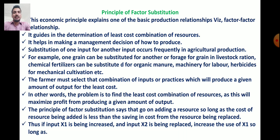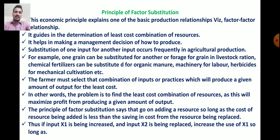For example, jowar can be substituted for maize in livestock feed. Chemical fertilizers can be substituted for organic manures for nutrient availability. Machinery can be substituted for human labor. Herbicides are a substitute for mechanical cultivation. Such substitutes are widely available in the agriculture sector. The farmer must select the combination of inputs that will produce a given amount of output for the least cost.